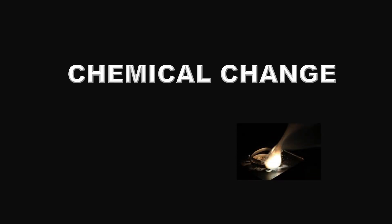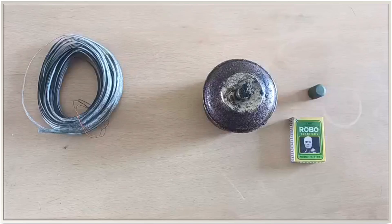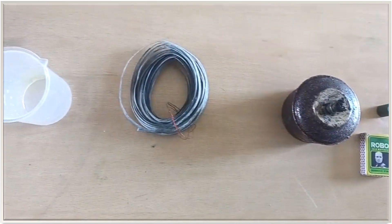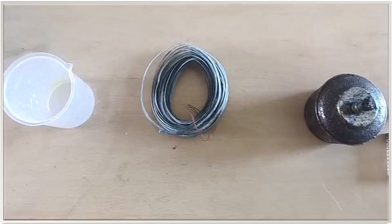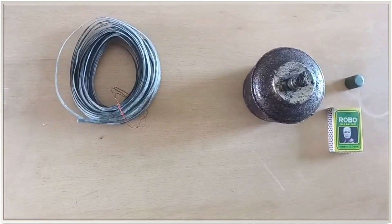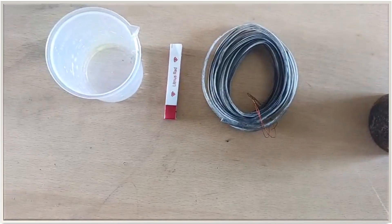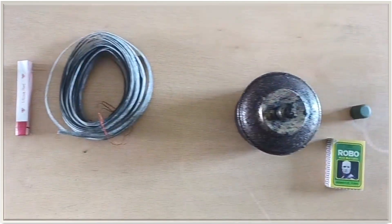Hi everyone, in this video we are going to observe a chemical change: burning of magnesium ribbon. To conduct this activity we need a magnesium ribbon, a burner, beaker, matchbox, litmus papers, and water.